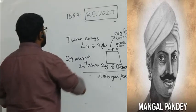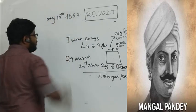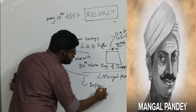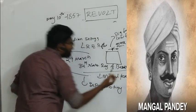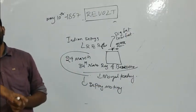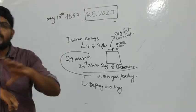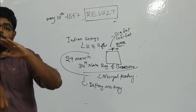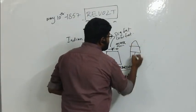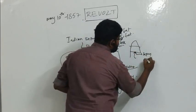When Mangal Pande shot his higher official, all other regiments also started shooting their higher officials and forming into revolts. This grew into a very big revolt on May 10th, 1857. From 29th March to 10th May, there were many sepoy mutinies. On 10th May, a major sepoy mutiny occurred in Meerut. All the sepoys revolted against the British, and the sepoy mutiny acted as the trigger for the 1857 revolt.